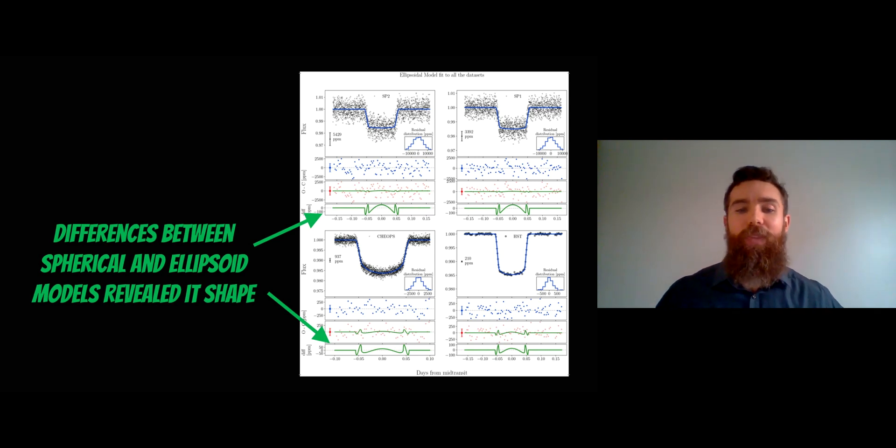It's actually where it starts to transit in front of the star and when it exits where you get this difference between the two models.